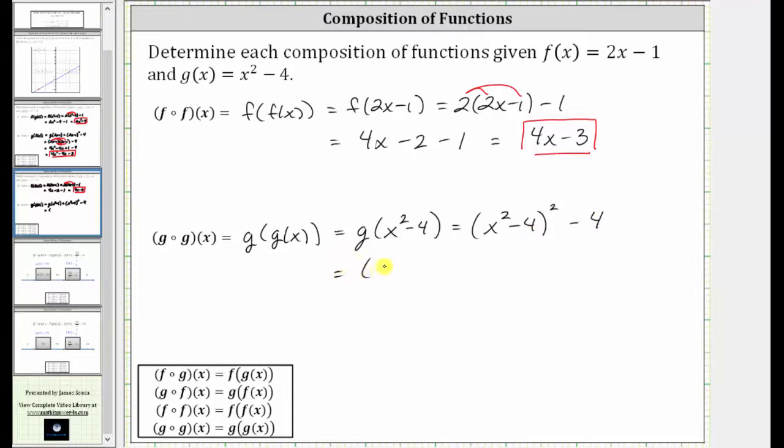So we have 2 factors of x squared minus 4, and then we still have minus 4. To multiply 2 binomials, we have 4 products. Multiplying x squared times x squared is x to the 4th. Next, we have x squared times negative 4, which is negative 4x squared.